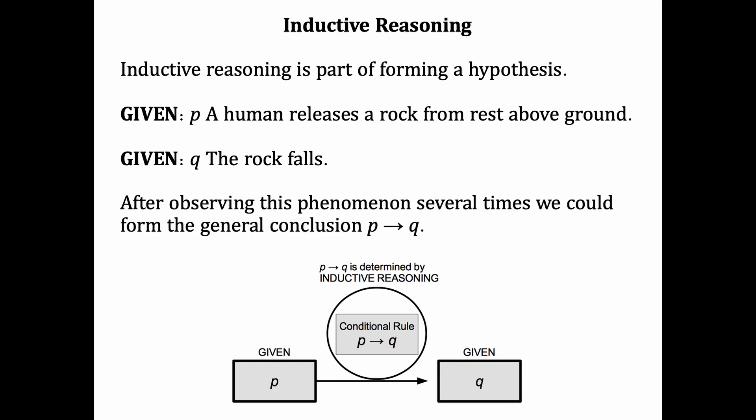After observing the phenomenon several times, we could then form the general conclusion. P leads to Q. Every time a human releases a rock from rest above ground, the rock falls. This is inductive reasoning, forming a general conclusion from specific examples.